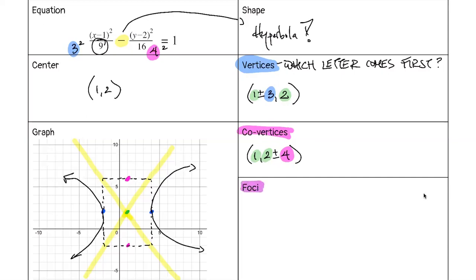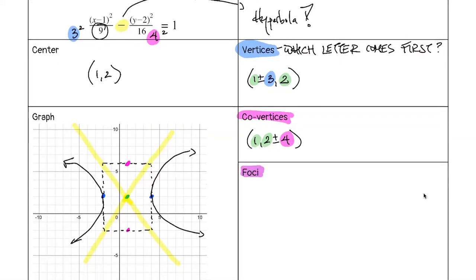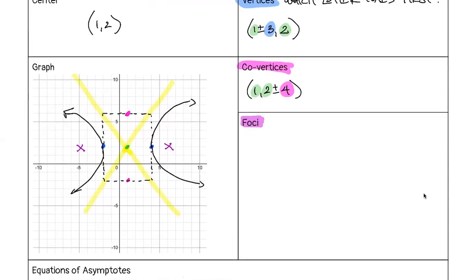Last but not least, we want to find the foci. The foci are further away — outside the blue dots. This means our Pythagorean identity is different from the ellipse: c² = a² + b². Here c, the distance from center to foci, is the largest distance and is the hypotenuse.